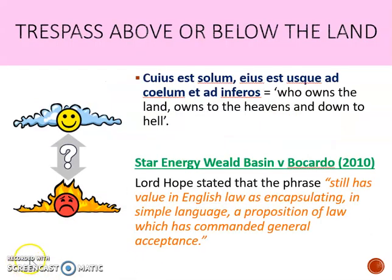There is a very ancient Latin saying — which means 'he who owns the land owns to the heavens and down to hell.' Years ago, there was a belief that when you owned the land, you owned everything above it and everything below it. Practically nowadays, that cannot stand — there has to be a limit to how much airspace and subsoil you actually own. In recent cases, courts have had to consider how much the claimant owns and can therefore claim a trespass on.